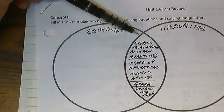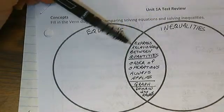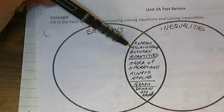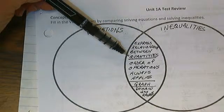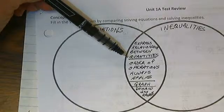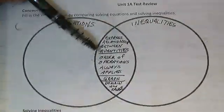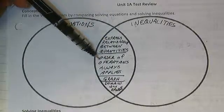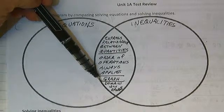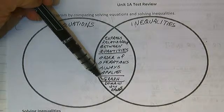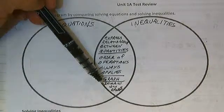Well, both equations and inequalities express a relationship between quantities. The relationship may not be exactly the same, but there is clearly a relationship. You always use order of operations. You can graph both equations and inequalities, and both have a domain and a range.